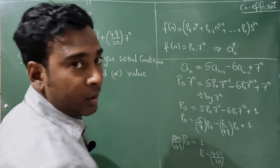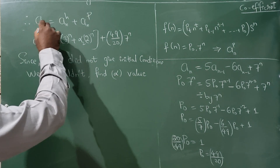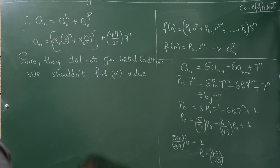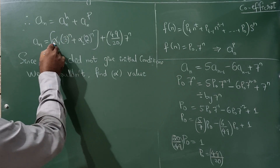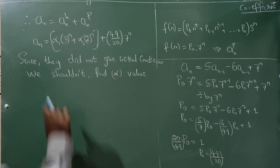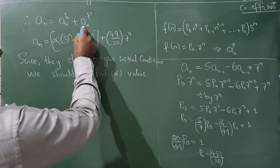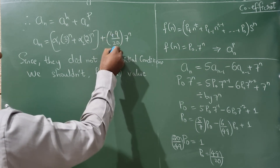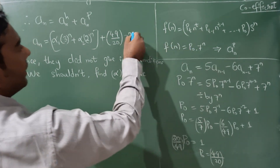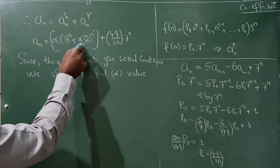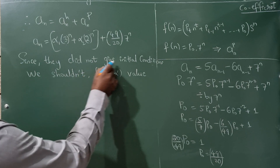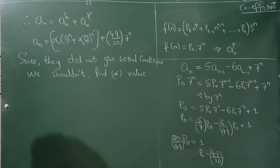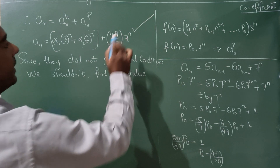Therefore, a(n) = homogeneous solution + particular solution = α1·3^n + α2·2^n + (49/20)·7^n. Note: since no initial conditions were given in the problem, we cannot find α1 and α2 values, so we leave them as is. This is the final answer.